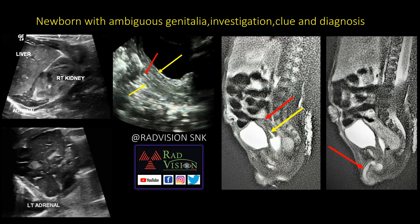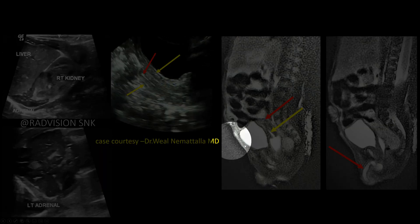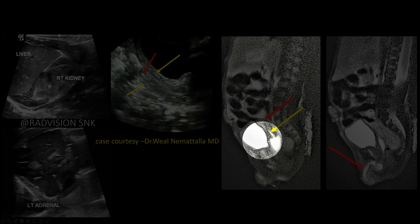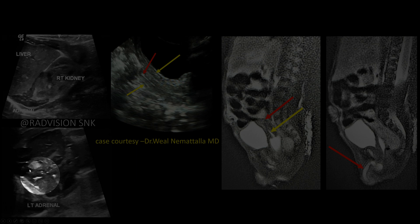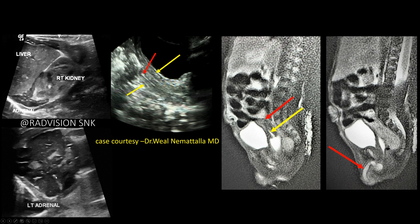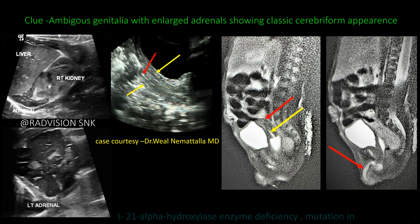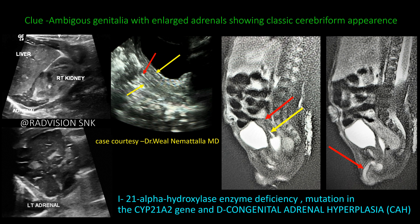Next case: a newborn with ambiguous genitalia. You can see there is a uterus along with a phallus (testis and penis structures) — ambiguous genitalia. The adrenal glands are enlarged, typically showing a cerebriform pattern. Whenever you see a newborn with ambiguous genitalia and enlarged adrenals with cerebriform appearance, definitely suspect congenital adrenal hyperplasia. The investigation is 21-alpha hydroxylase enzyme deficiency and mutation in the CYP21A2 gene. The diagnosis is congenital adrenal hyperplasia.